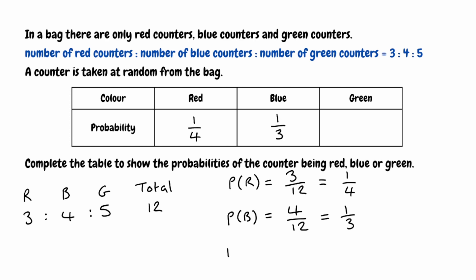And then finally, our probability of picking the green counter. We know there were five parts for green out of the total possible 12 parts. So the probability of green would be 5 twelfths. We can't simplify that any further. So in the table, all we're going to do for green is put 5 twelfths. So our probabilities of red, blue and green would be one quarter, one third and 5 twelfths.